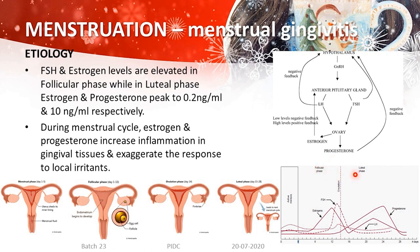During the follicular phase, more follicle-stimulating hormone and estrogen are present. During the luteal phase, there is more progesterone and more estrogen — progesterone peaks to around 0.2 nanogram per ml and progesterone to 10 nanogram per ml. This increase of hormones results in increased inflammation of the gingival tissues and exaggerates the response to local irritants. The increased gingivitis occurring during the menstrual period is primarily due to an increase in estrogen and progesterone.